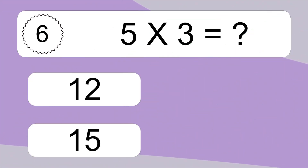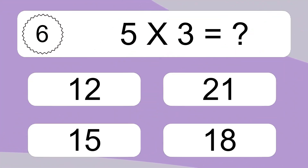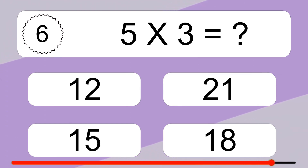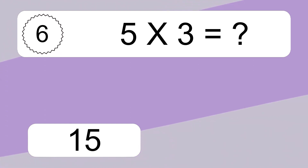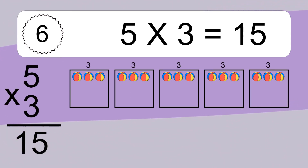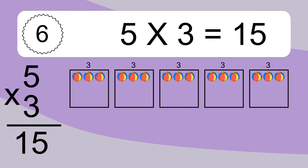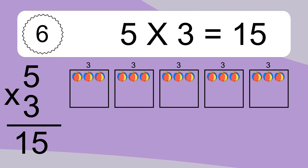5 times 8. We have 5 boxes, and each box has 3 colorful balls inside. If you count all the balls in all the boxes together, you will have 5 times 3 balls. This equals 15 balls.